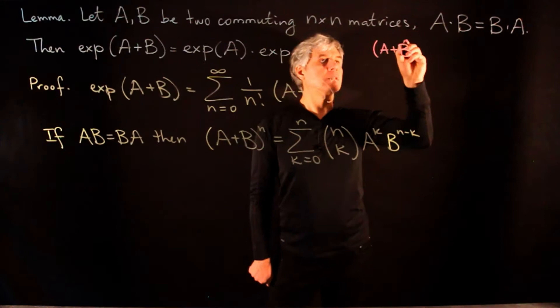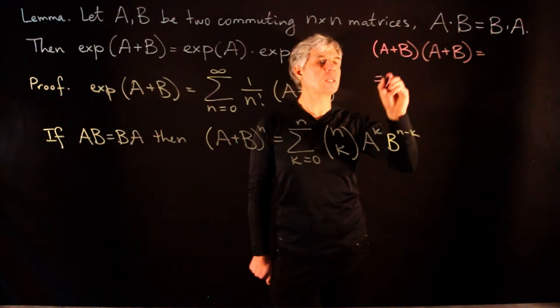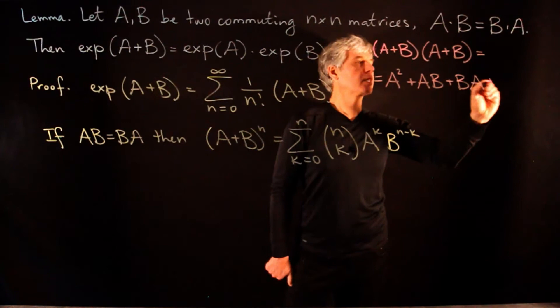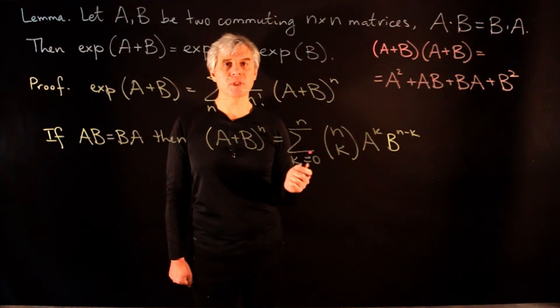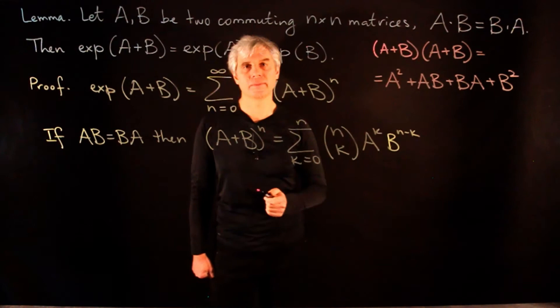Note that this formula only holds for commuting matrices. For non-commuting matrices, (A+B)(A+B) gives A² + AB + BA + B², and we cannot combine AB + BA into a single term 2AB. For commuting matrices, the proof of this formula is exactly the same as for real numbers.